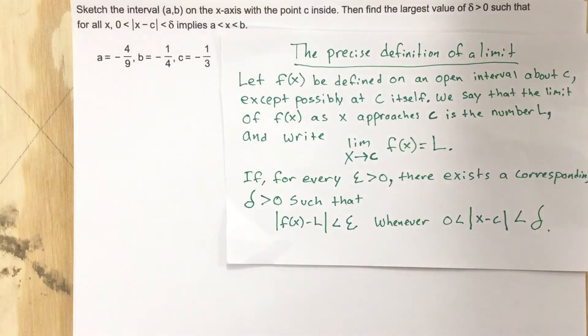This is problem number one for section 2.3. The problem says sketch the interval (a,b) on the x-axis with the point c inside, then find the largest value of delta greater than zero such that for all x, zero less than absolute value x minus c less than delta implies a less than x less than b.